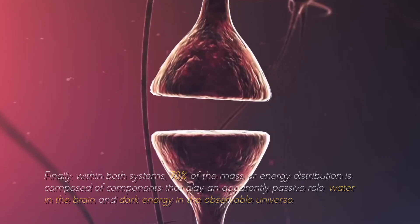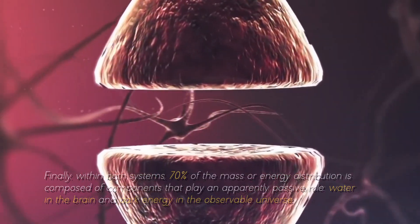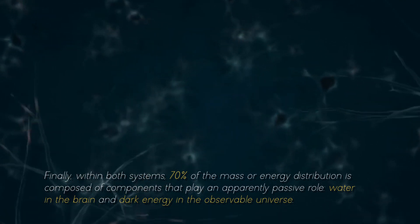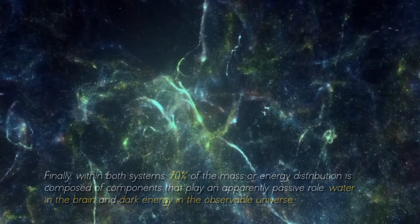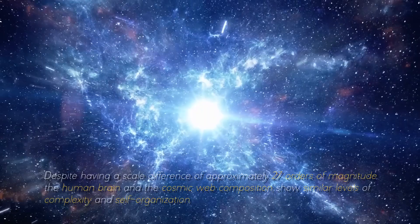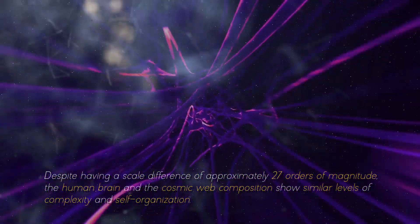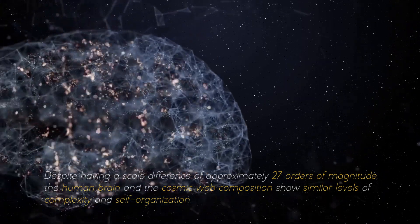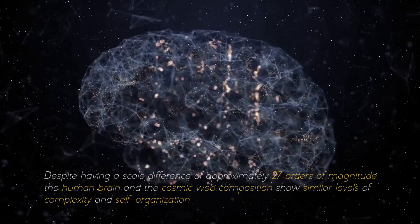Finally, within both systems, 70% of the mass or energy distribution is composed of components that play an apparently passive role, water in the brain and dark energy in the observable universe. Despite having a scale difference of approximately 7 orders of magnitude, the brain and the cosmic web composition show similar levels of complexity and self-organization.